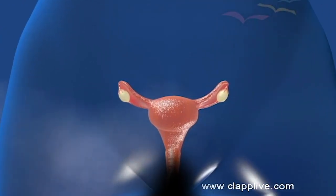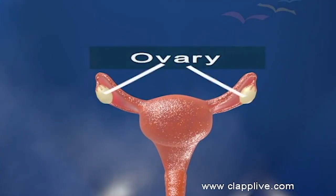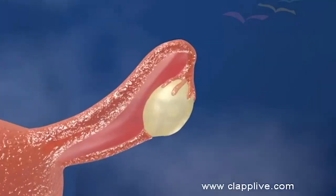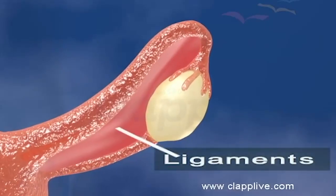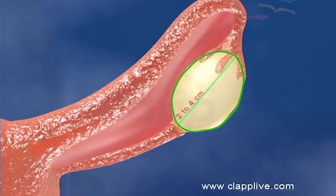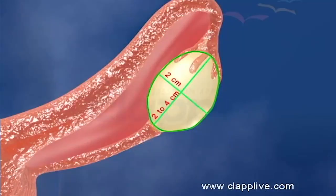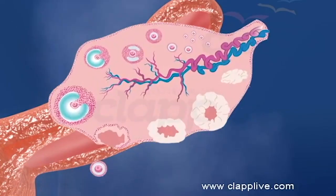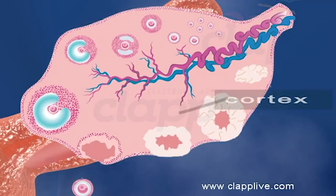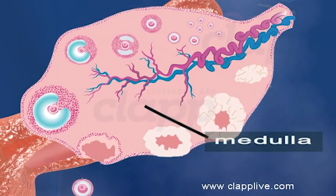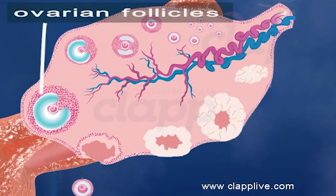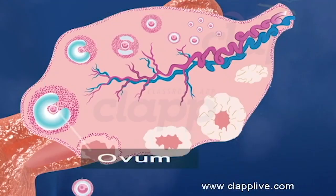Ovaries are the primary sex organ of a female. They are solid structures located in the lower part of the abdomen. They are connected by ligaments to the uterus and lateral pelvic wall. Each ovary is 2 to 4 cm long and 2 cm wide. It is composed of connective tissue called stroma, covered by a layer of germinal epithelium. Stroma has an outer cortex and an inner medulla. The ovarian cortex contains some rounded bodies named follicles at various stages of development. Each follicle contains an ovum.